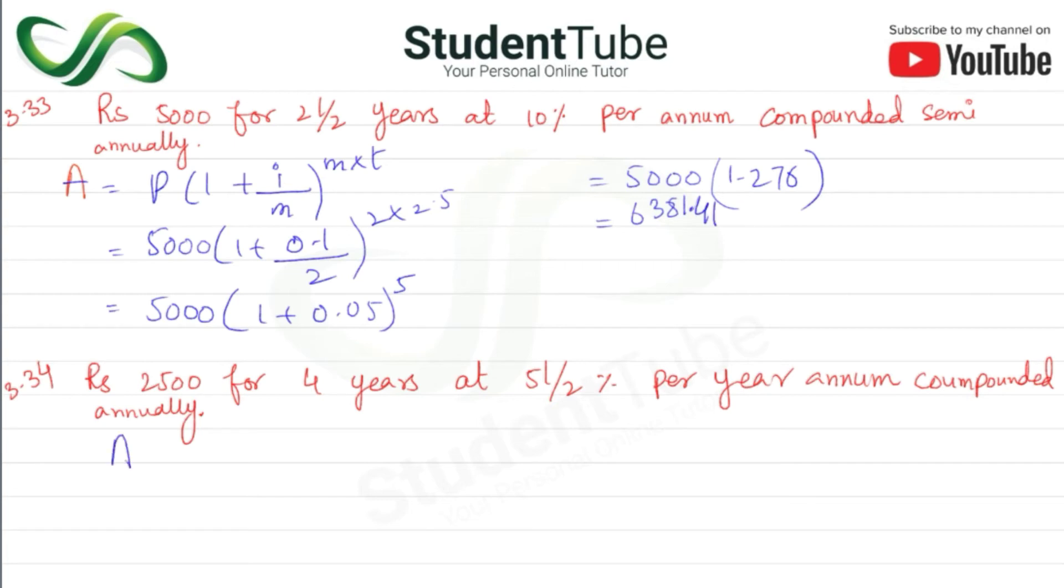Same way, A is equal to P times (1 plus i upon m) to the power m multiply by t. So P is 2500, 1 plus i is 5.5 divided by compounded annually which is 1, and raised to 1 multiply by 4, four years.